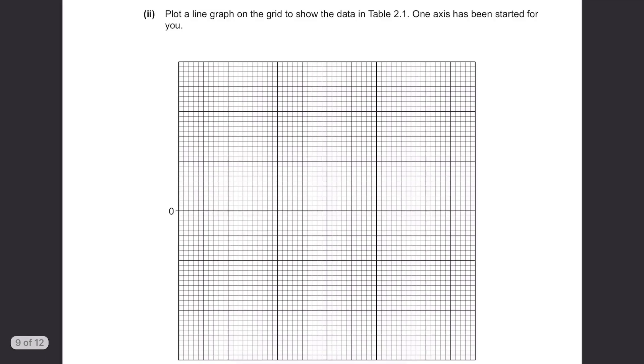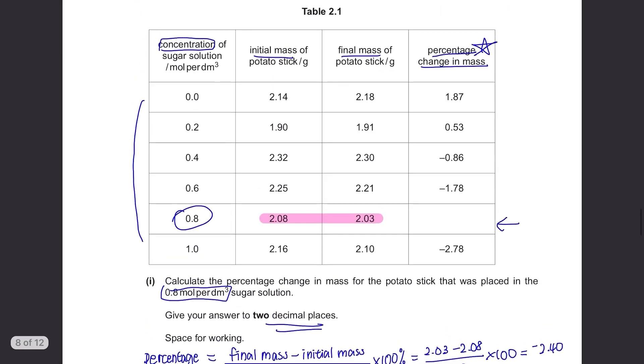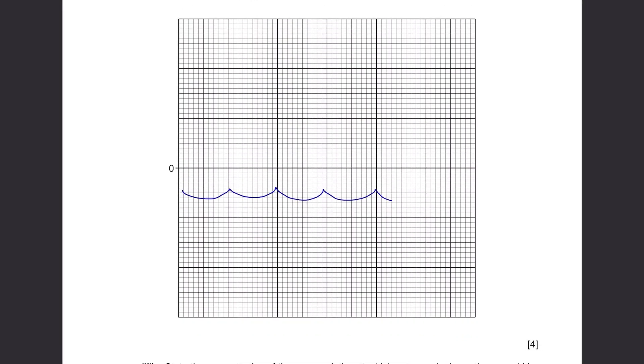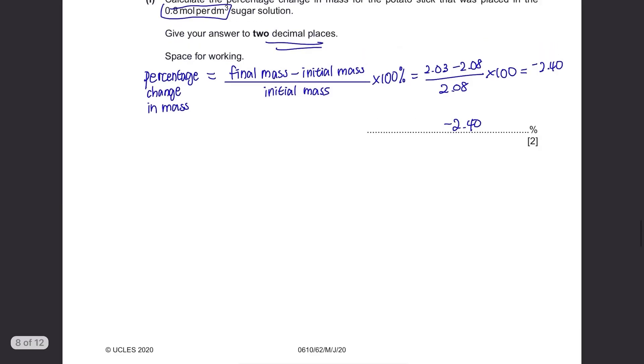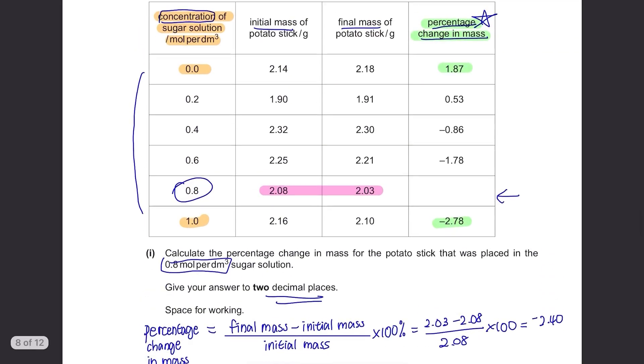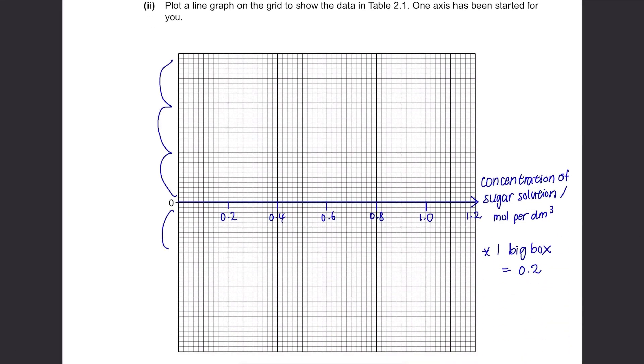Part B(iii): Plot a line graph to show the data in table 2.1. One axis has been started for you. They have drawn the x-axis here, 0 starts from here. First identify what are the x and y-axis. X-axis is the independent variable so in this case it's the concentration of sugar solution and y-axis is the dependent variable so it's the percentage change in mass. The concentration is from 0.0 to 1.0 and we have six big boxes here so let's put one big box as 0.2. We can plot from 0.0 to 1.2 then. The percentage change is from minus 2.78 to 1.87 and we have three big boxes each for the positive and negative side so let's put one big box as 1.00. Plot the graph accurately using a sharp pencil. Connect all the points or draw a line of best fit if you can't connect them.